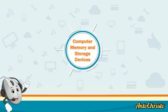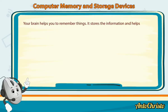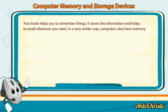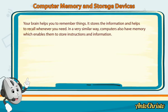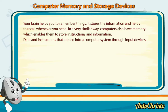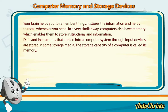Chapter 3: Computer Memory and Storage Devices. Your brain helps you to remember things — it stores information and helps to recall it whenever you need. In a very similar way, computers also have memory which enables them to store instructions and information. Data and instructions fed into a computer system through input devices are stored in some storage media. The storage capacity of a computer is called its memory.